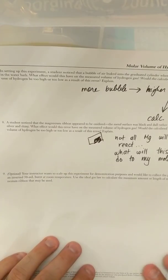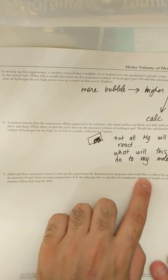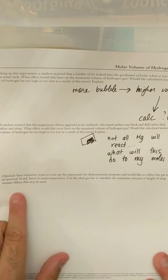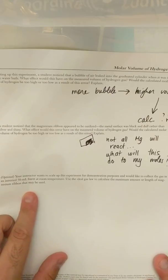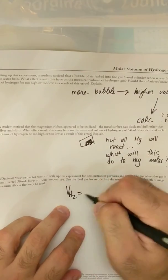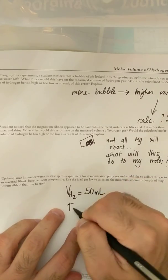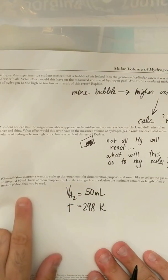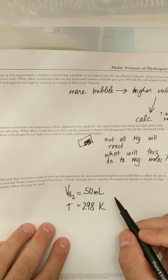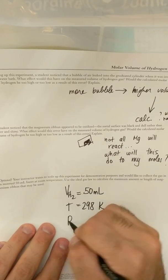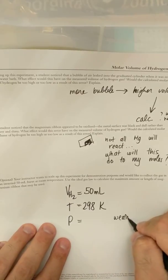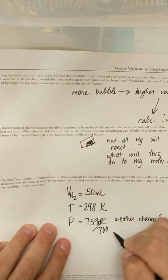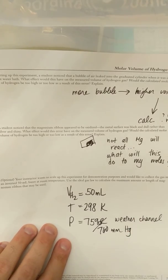And then for number nine, it says it's optional. You may not understand it, but it says your instructor wants to scale up this experiment for demonstration purposes and would like to collect the gas in an inverted 50 milliliter burette at room temperature. Use the ideal gas law to calculate the maximum amount of length of magnesium ribbon that may be used. So what I'm saying is I want my volume of H2 to be 50 milliliters at room temperature, which is 298 Kelvin. My volume of hydrogen would be 50 milliliters. My temperature would be 298. And my pressure would be whatever weatherchannel.com gave you. So it's probably somewhere around 759 or 760 millimeters of mercury. So it's about one atmosphere.